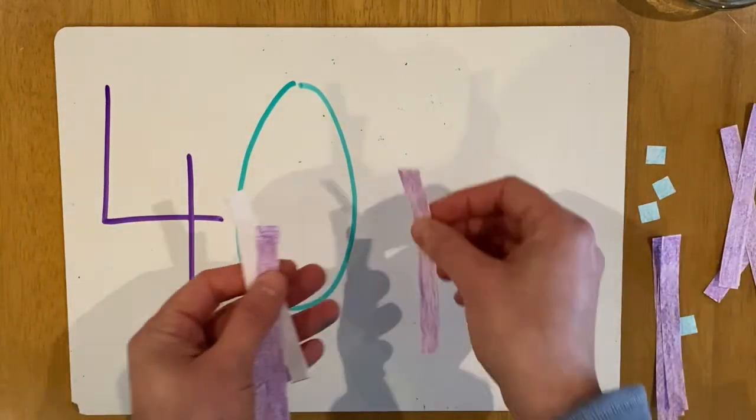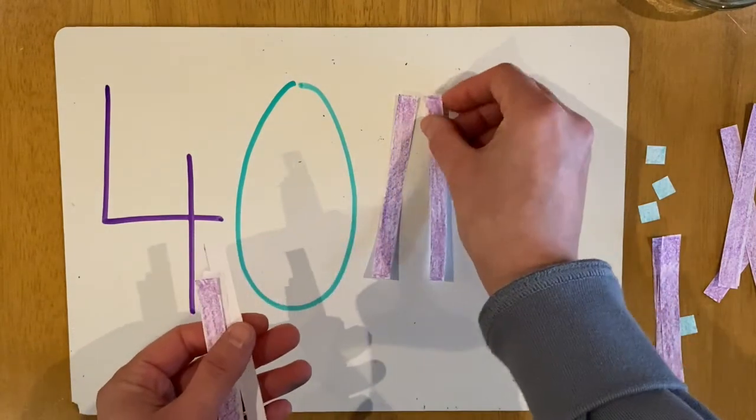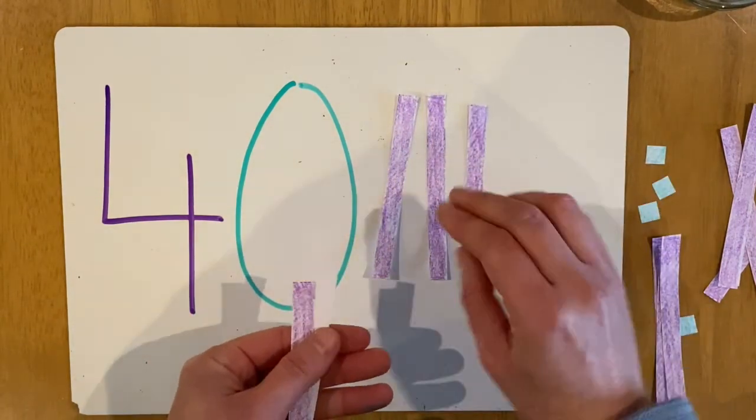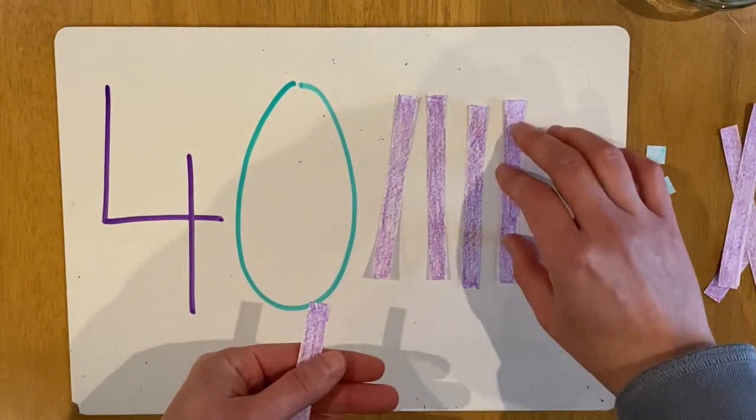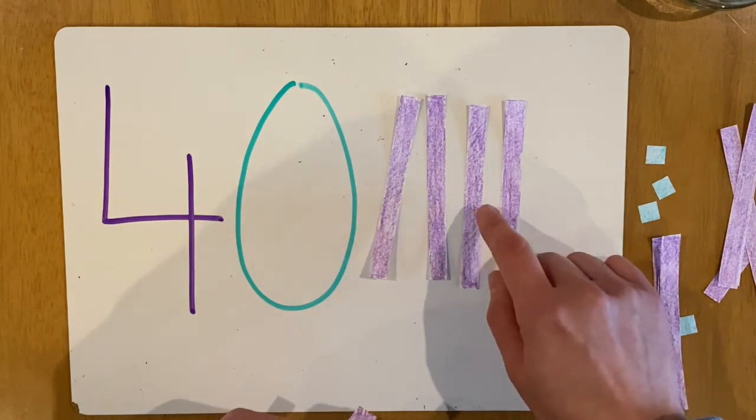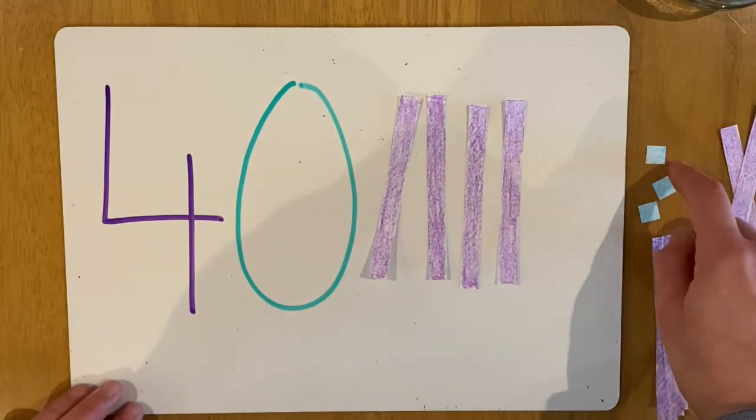So we need four tens deans. 1, 2, 3, 4. 10, 20, 30, 40. Do we need any ones deans?